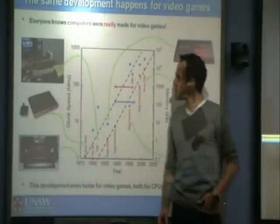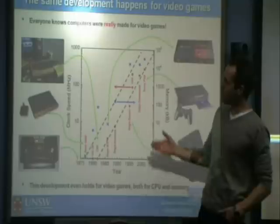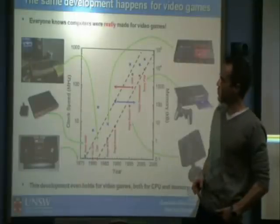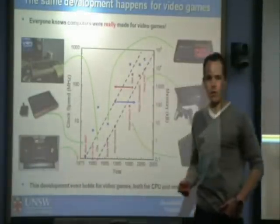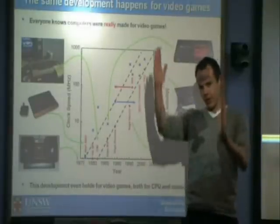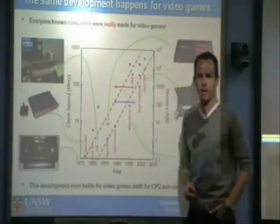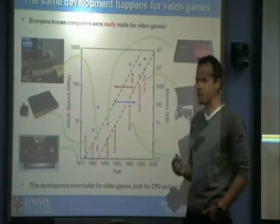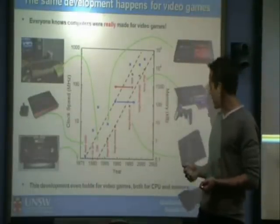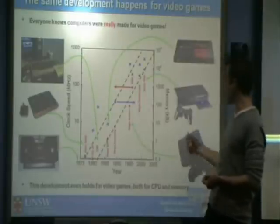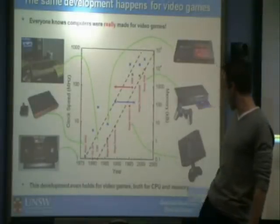Everyone knows that computers are really about games. You can look at the evolution of computer games in much the same way. You start out with something really old like Pong, where you just have two tennis rackets moving up and down the screen. My personal favourite was the Atari 2600, which had Space Invaders and Pac-Man. And moving forward with more and more transistors on the chip, you get to things like PlayStation 2 and PlayStation 3, which many of you probably have at home already.